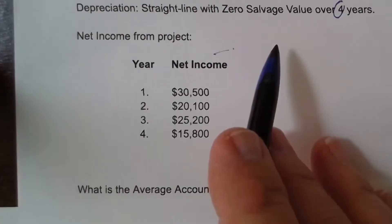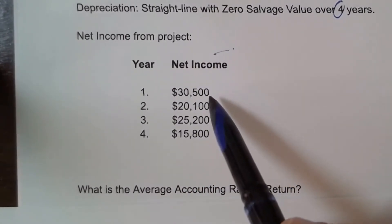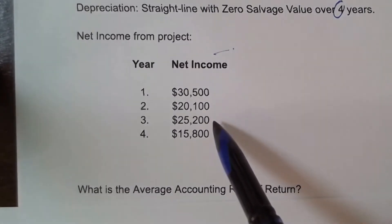So we've got the amount and we know that the net income from the project over the four years is going to be $30,500, the second year $20,100, $25,200, and then the last year $15,800.